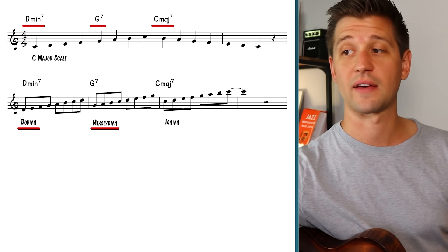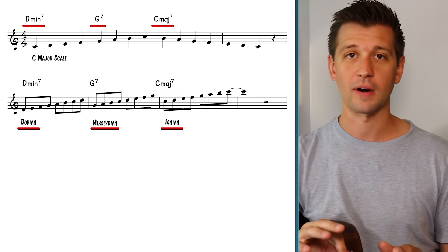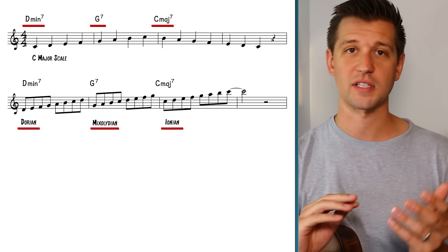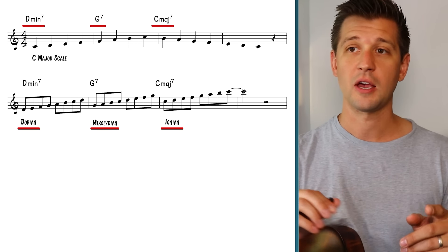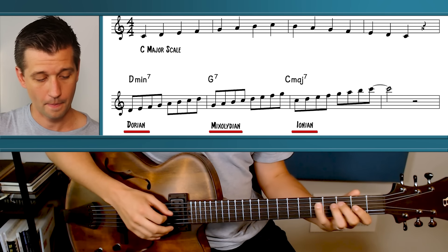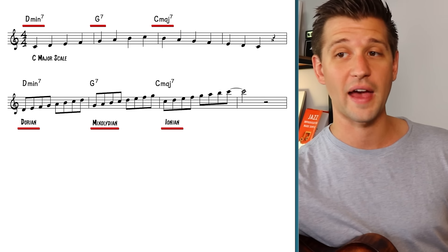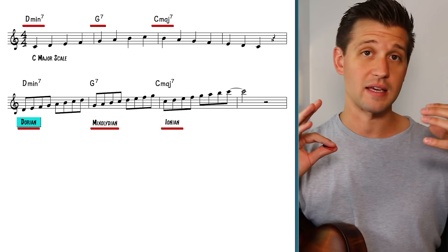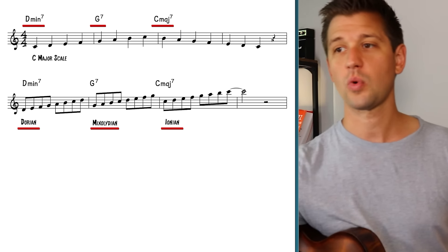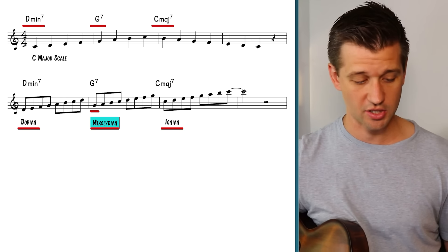The mode for D minor 7 is Dorian, for G7 is Mixolydian, and for C major 7 is Ionian. Now if those names sound foreign, don't worry — it's very simple. D minor and G7 all share the same notes as the C major scale, so all we're going to do is play the C major scale starting on the D note over the D minor 7. That's Dorian — just a fancy name for the second mode of the major scale, starting and ending on the second tone. Mixolydian means starting and ending on the fifth tone of C major, which is G.